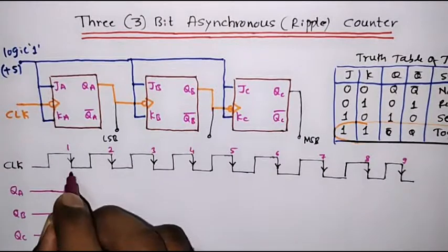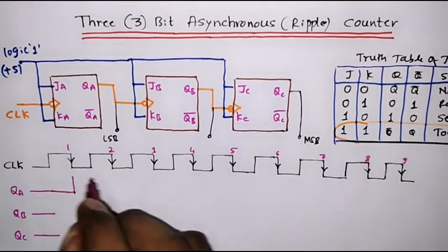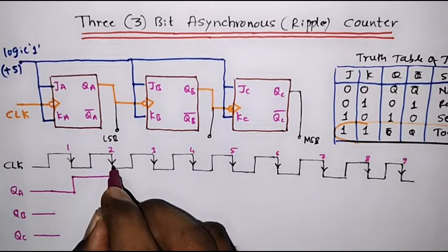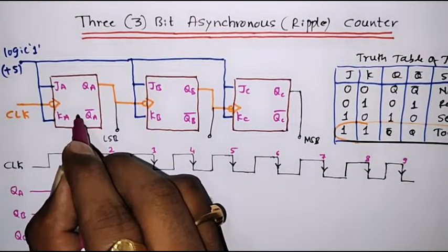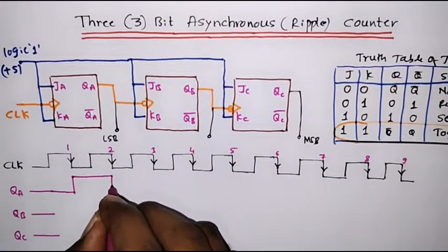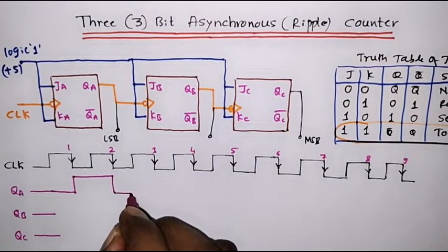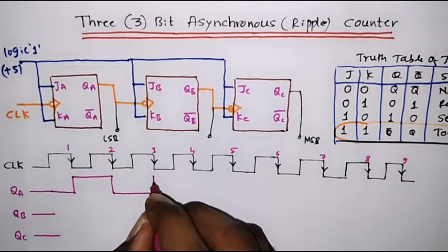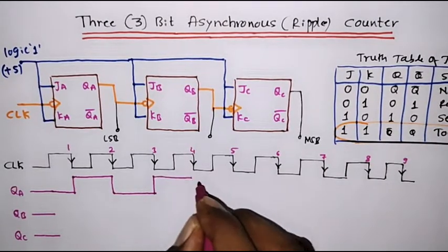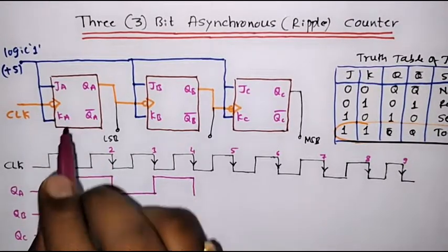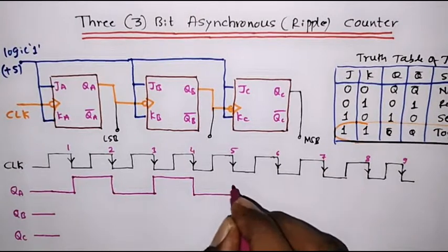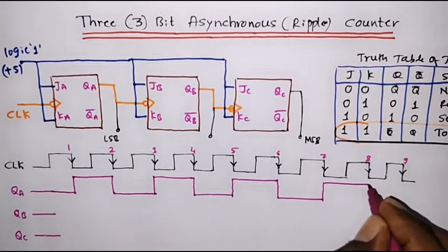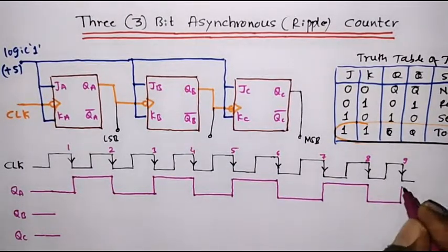At the first negative edge of the clock pulse, QA goes high and will be high until the next clock pulse. When the next negative edge arrives, the flip-flop toggles again — it was 1, so it goes to 0, and stays 0 till the next negative edge, where it toggles high again. At each negative edge of the clock pulse, the first flip-flop will be active and continuously toggle.